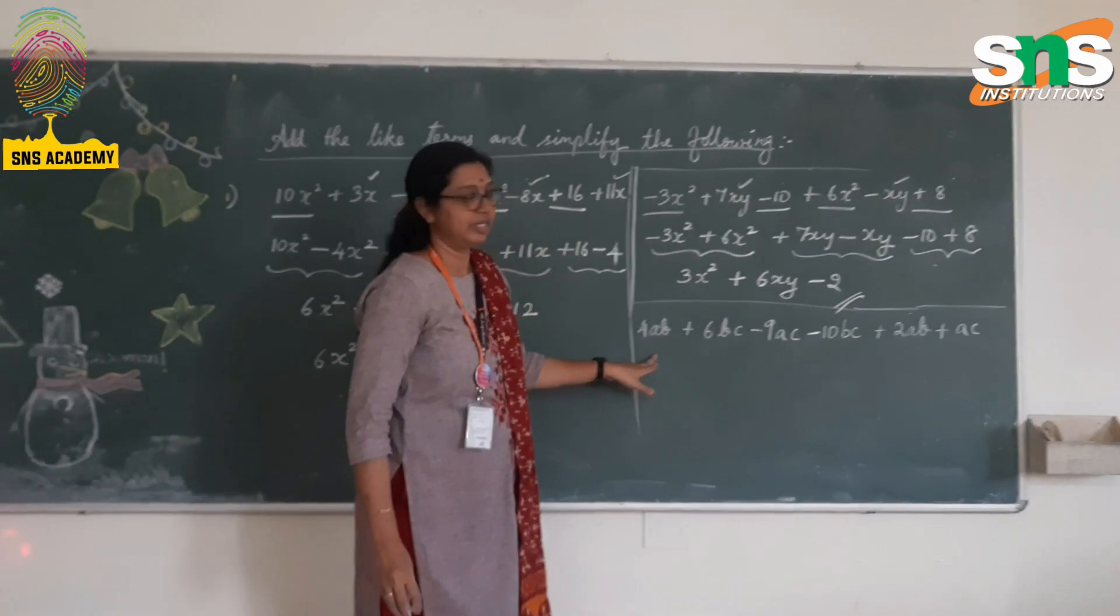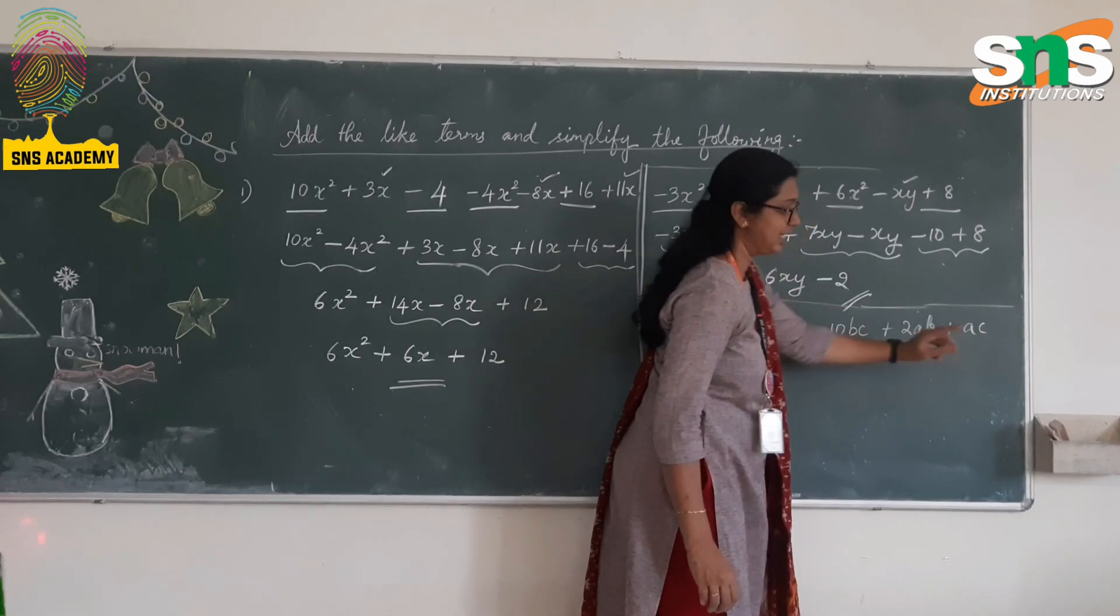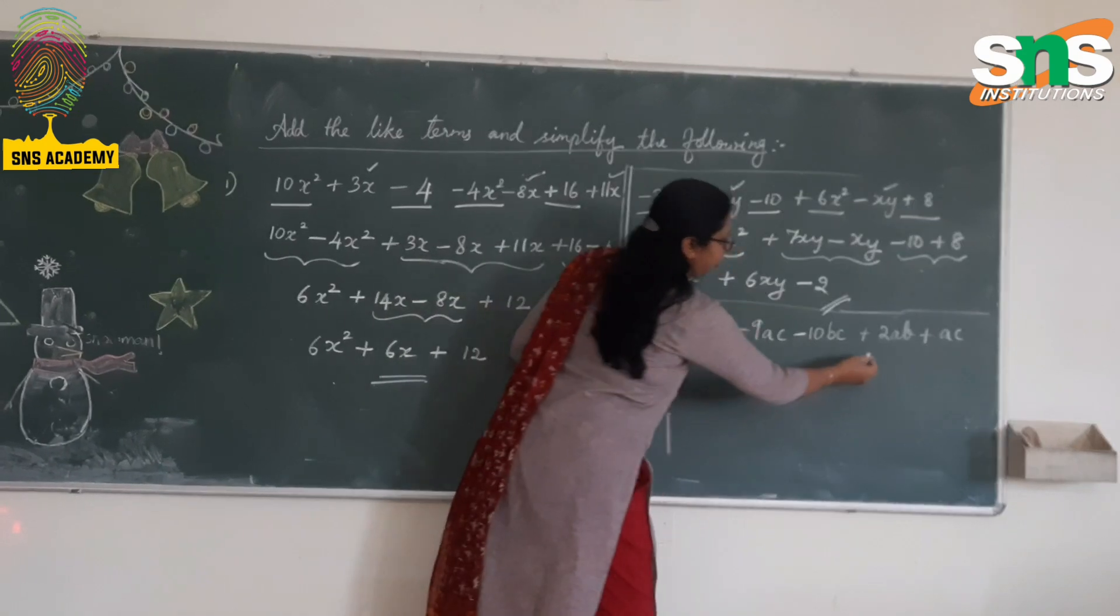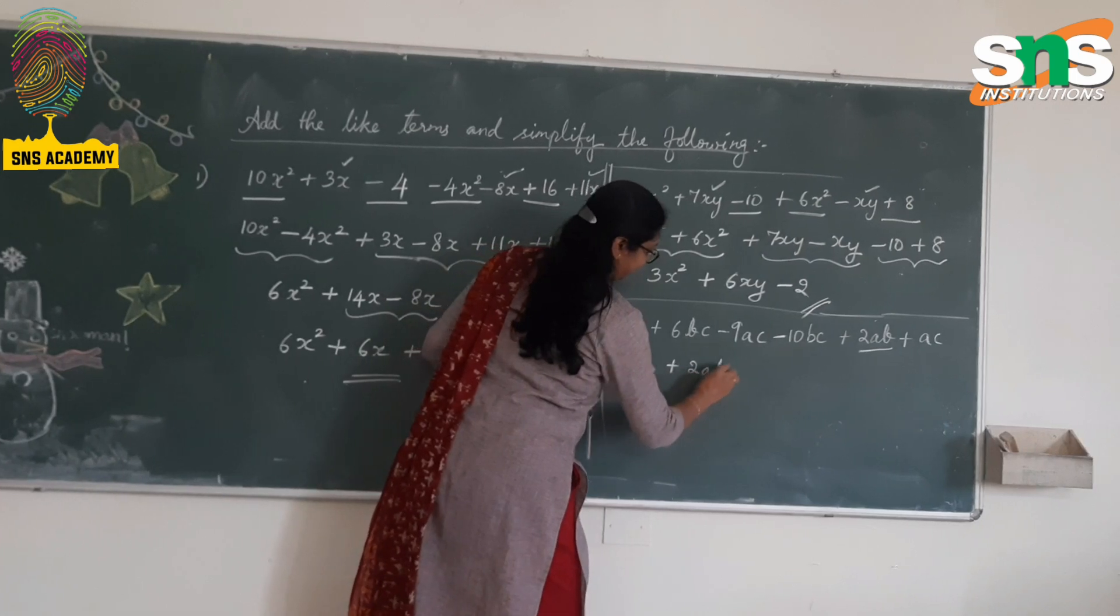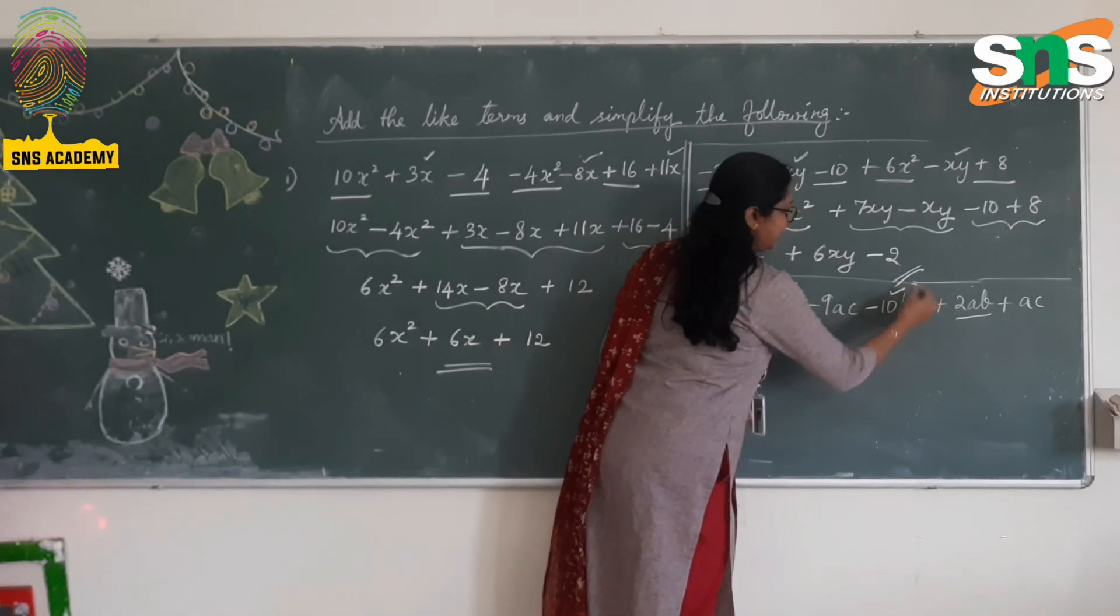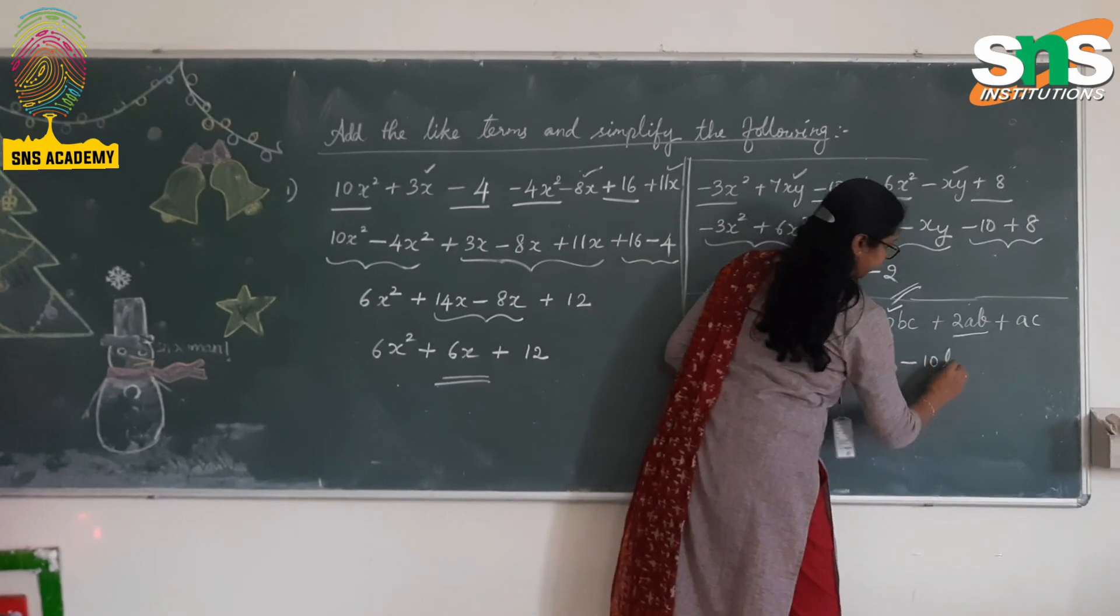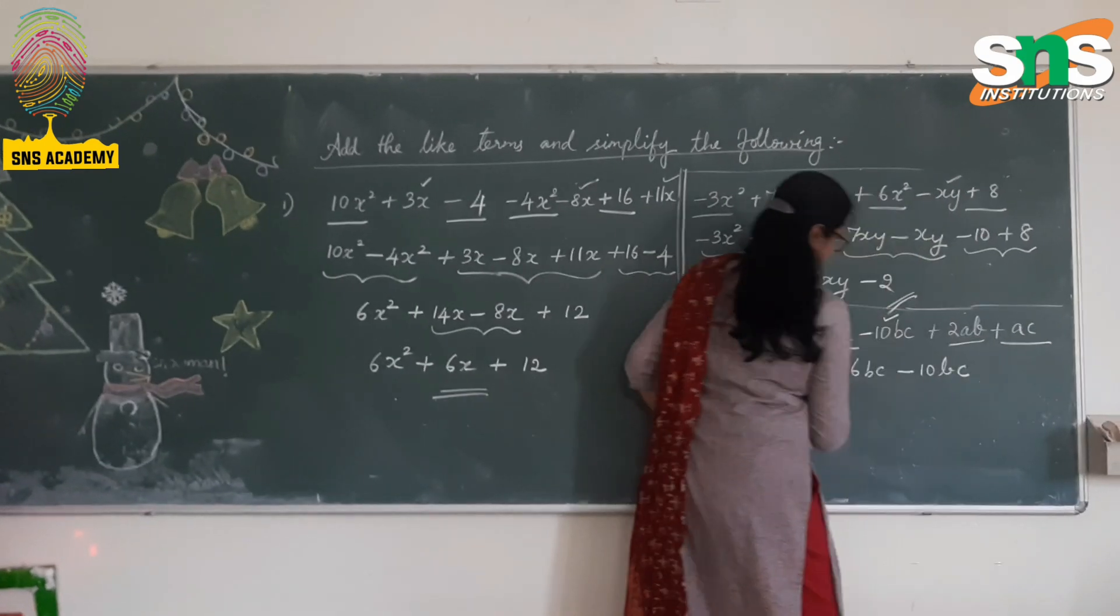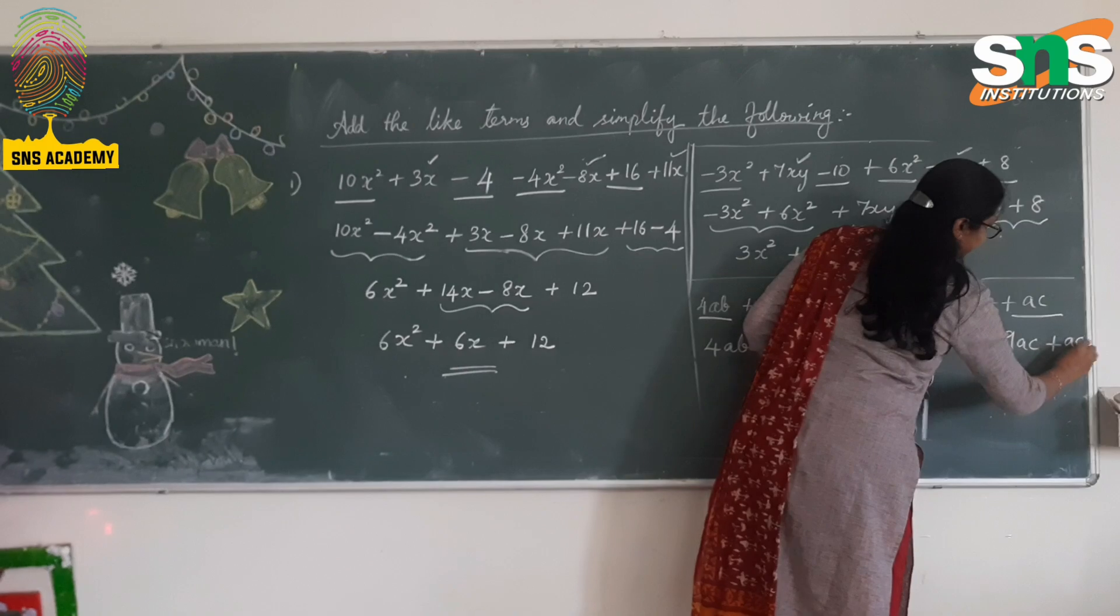And here the last question becomes 4ab + 6bc - 9ac - 10bc + 2ab + ac. Identifying the like terms. The ab terms, you have to check for the terms ab. So rearrange them, 4ab + 2ab. Next comes bc, 6bc and -10bc. And finally, ac comes, -9ac + ac.